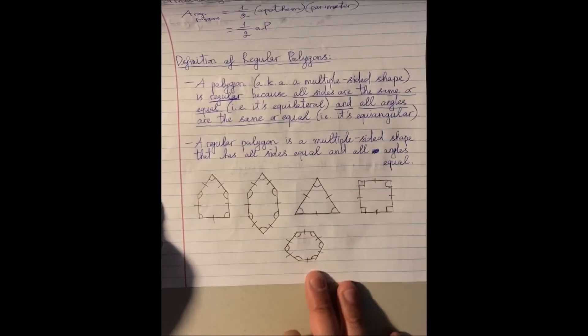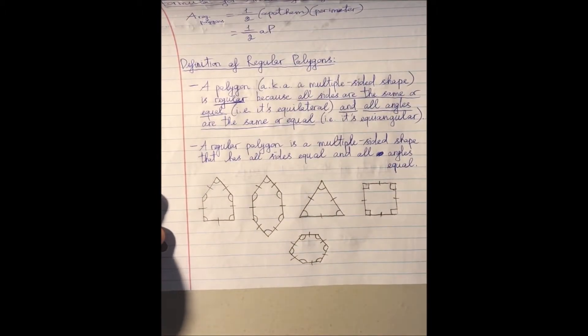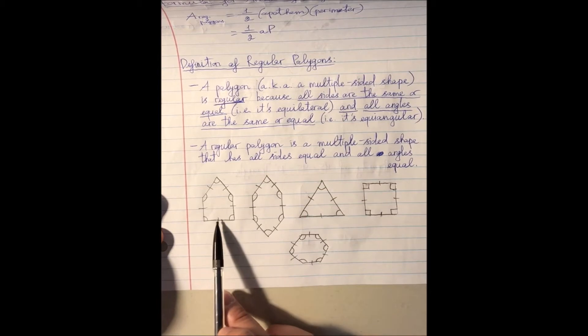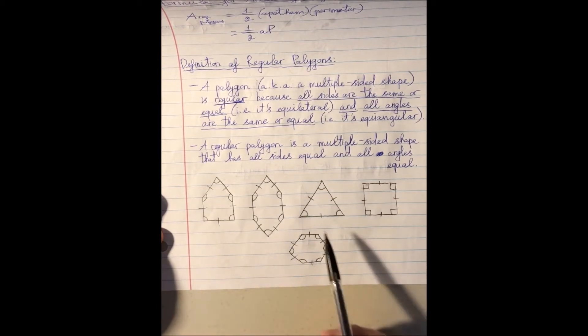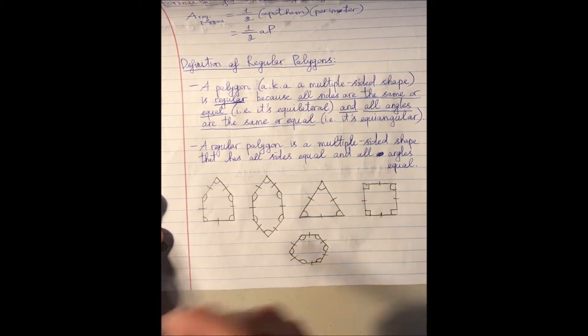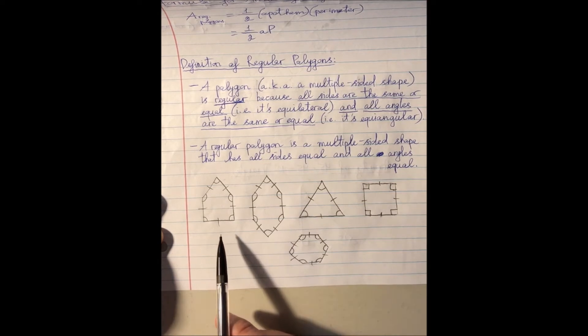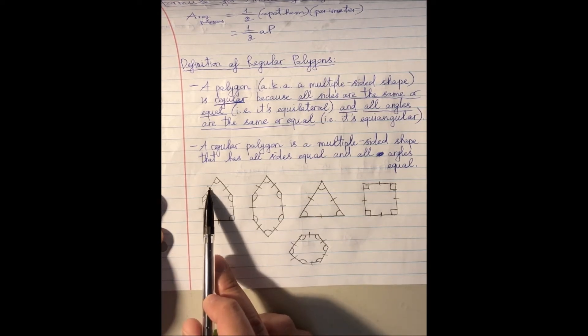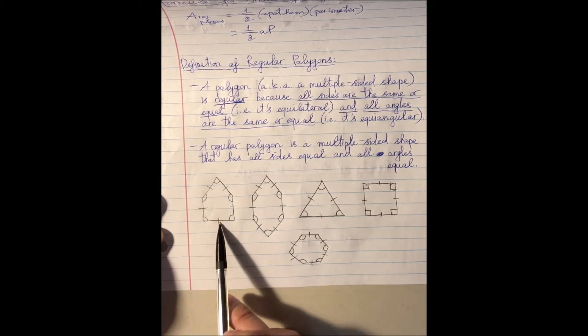A general representation of that is, for example, you have a pentagon, hexagon, you even have a triangle, a square, and hexagon. And of course there are a lot more multiple-sided shapes that can be drawn here, but these are just the general representation of what I'm trying to say. Remember that this definition applies for all regular polygons, and as you can see